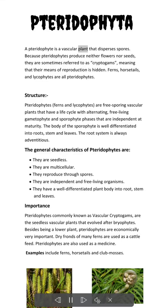A pteridophyte is a vascular plant that disperses spores. Because pteridophytes produce neither flowers nor seeds, they are sometimes referred to as cryptogams, meaning that their means of reproduction is hidden. Ferns, horsetails, and lycophytes are all pteridophytes.